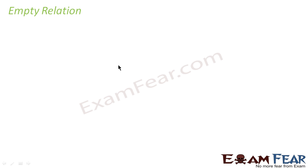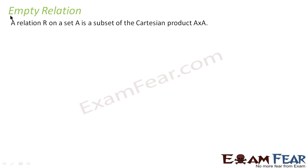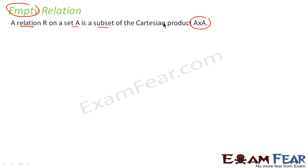The first is empty relation. As the name suggests, empty means nothing — it has zero elements. A relation R on set A is nothing but a subset of the Cartesian product A cross A. If you don't know Cartesian product, please go watch the Class 11 video.